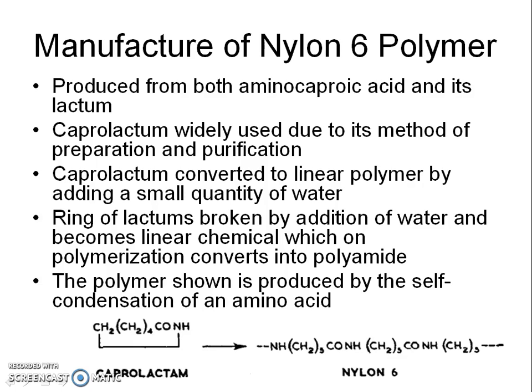Caprolactam is widely used as a monomer due to its method of preparation and purification. Caprolactam is converted to a linear polymer by adding a small quantity of water, as pure anhydrous caprolactam does not polymerize alone when heated in a closed vessel. Water acts as an initiator and breaks down the ring of the lactam to form a linear chemical which, on polymerization, converts into polyamide. The polymer so formed, as shown below, is produced by self-condensation of an amino acid.